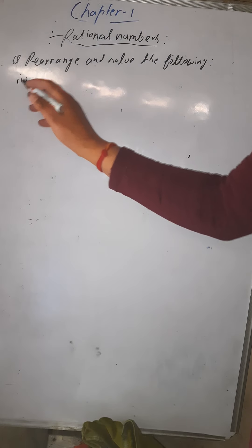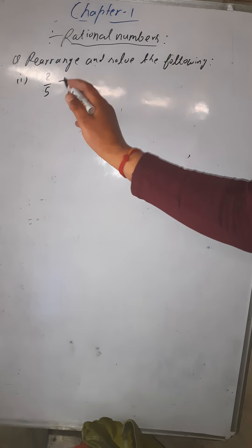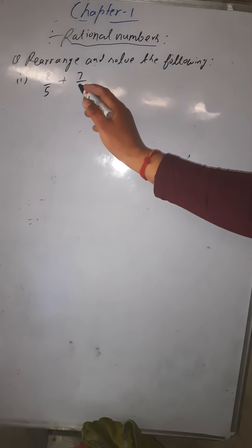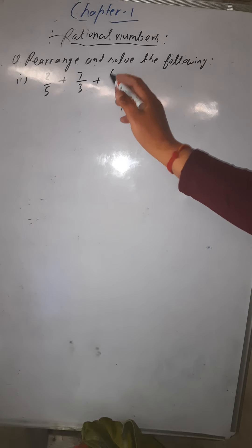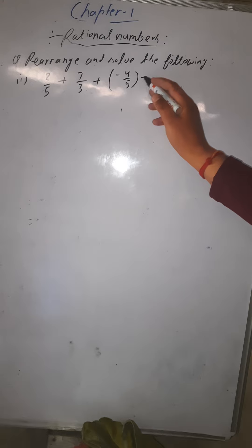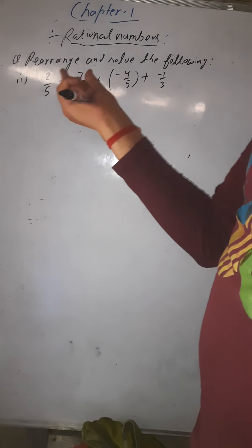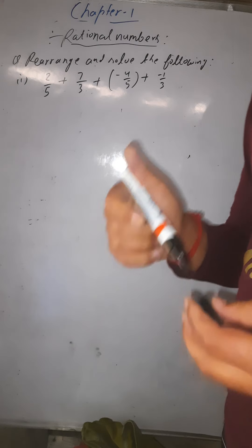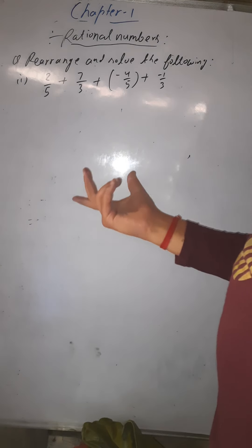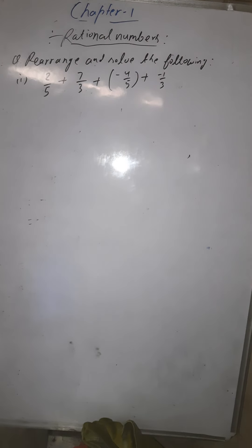The first question is: 2/5 + 7/3 + (-4/5) + (-1/3). First of all, you have to rearrange. We have already done the properties related to rational numbers — addition, associative, and commutative properties.